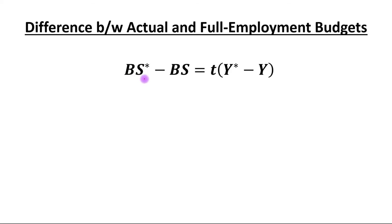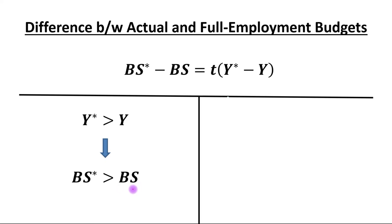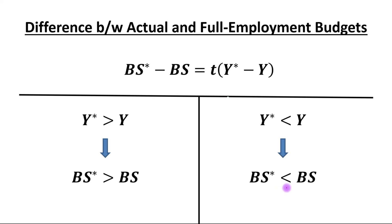The difference between actual and full employment budget surplus equals: budget surplus at full employment minus actual budget surplus, which equals tax rate times (potential output minus actual output). If potential output is greater than actual output, the full employment budget surplus will be greater than the actual budget surplus. If potential output is less than actual output, the full employment budget surplus will be less than the actual budget surplus. Thank you.